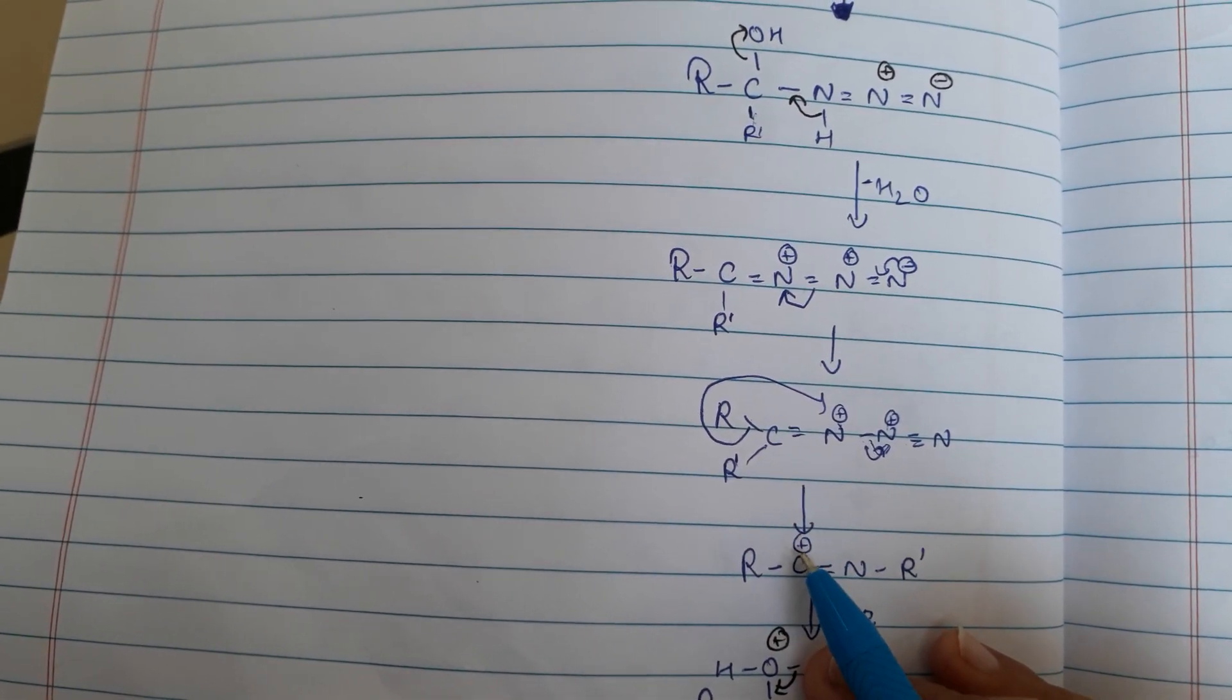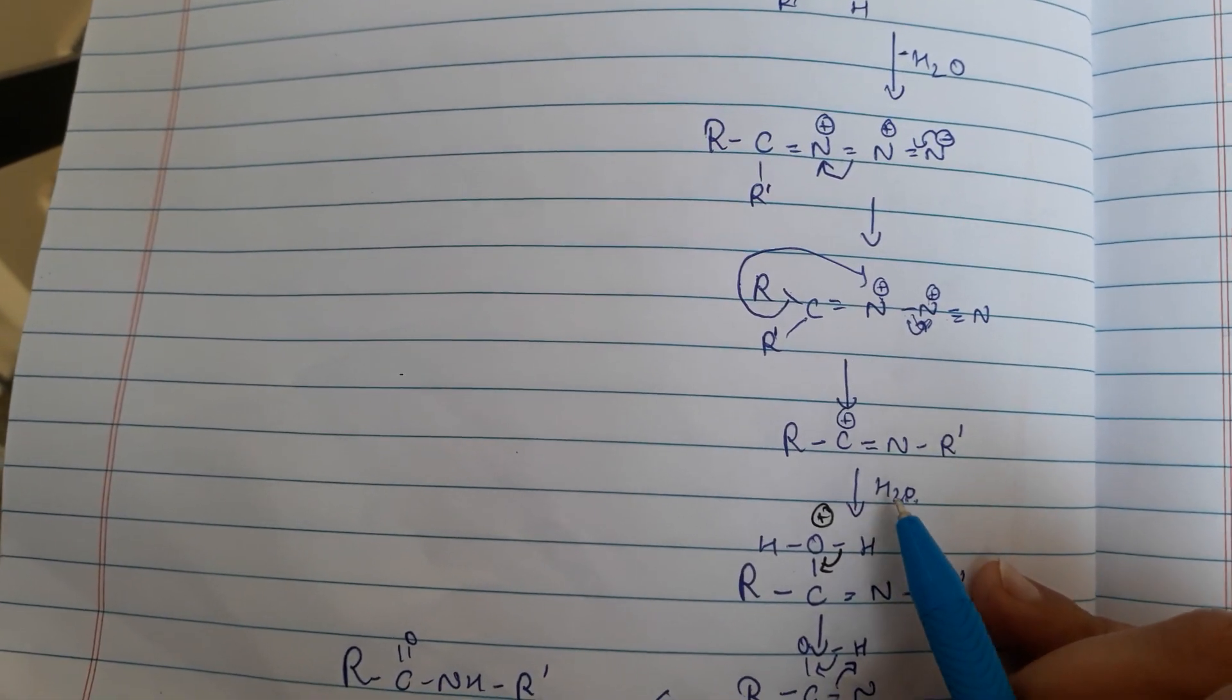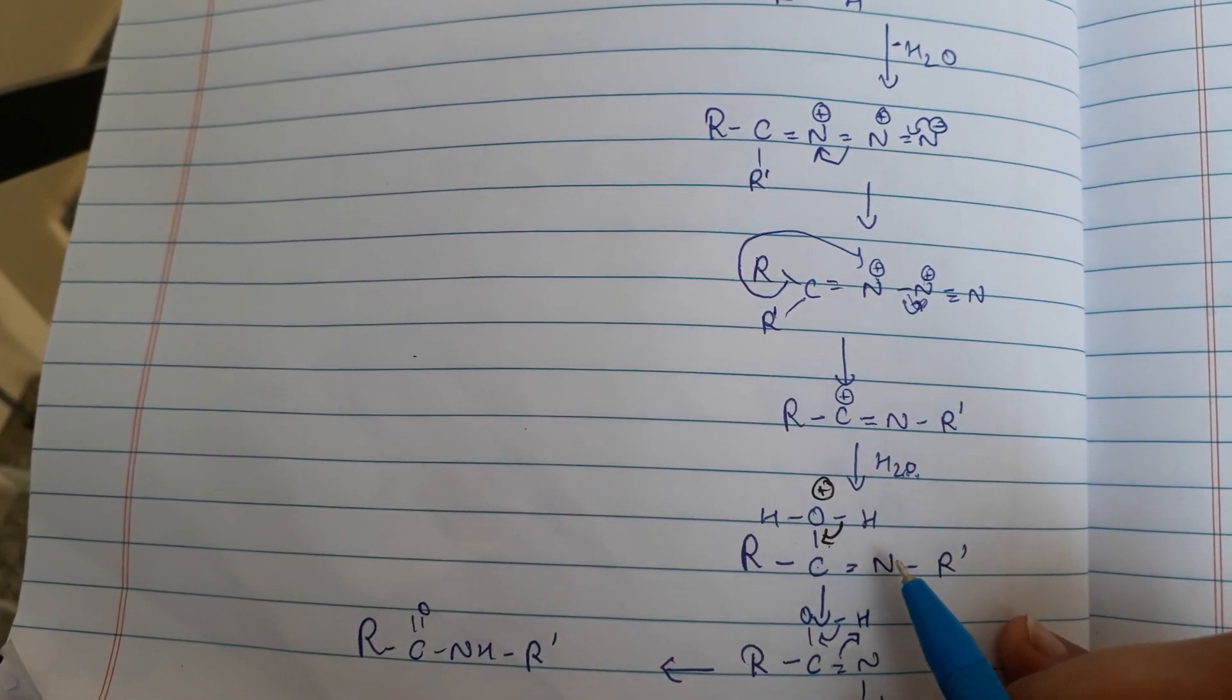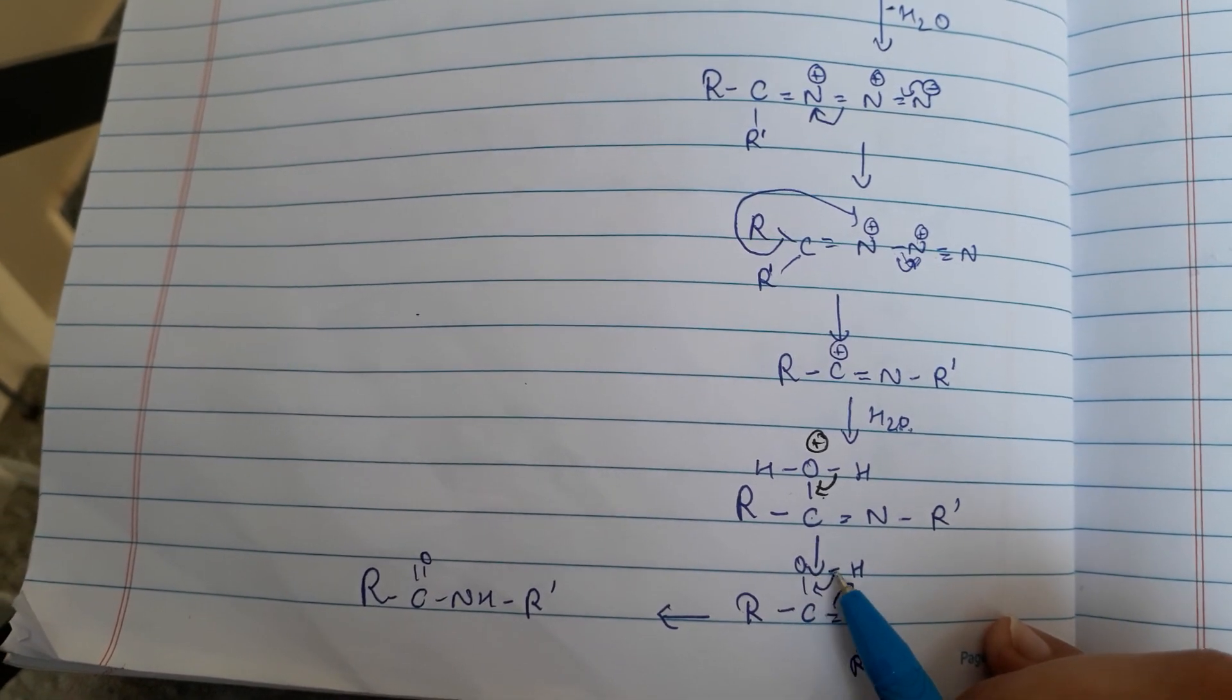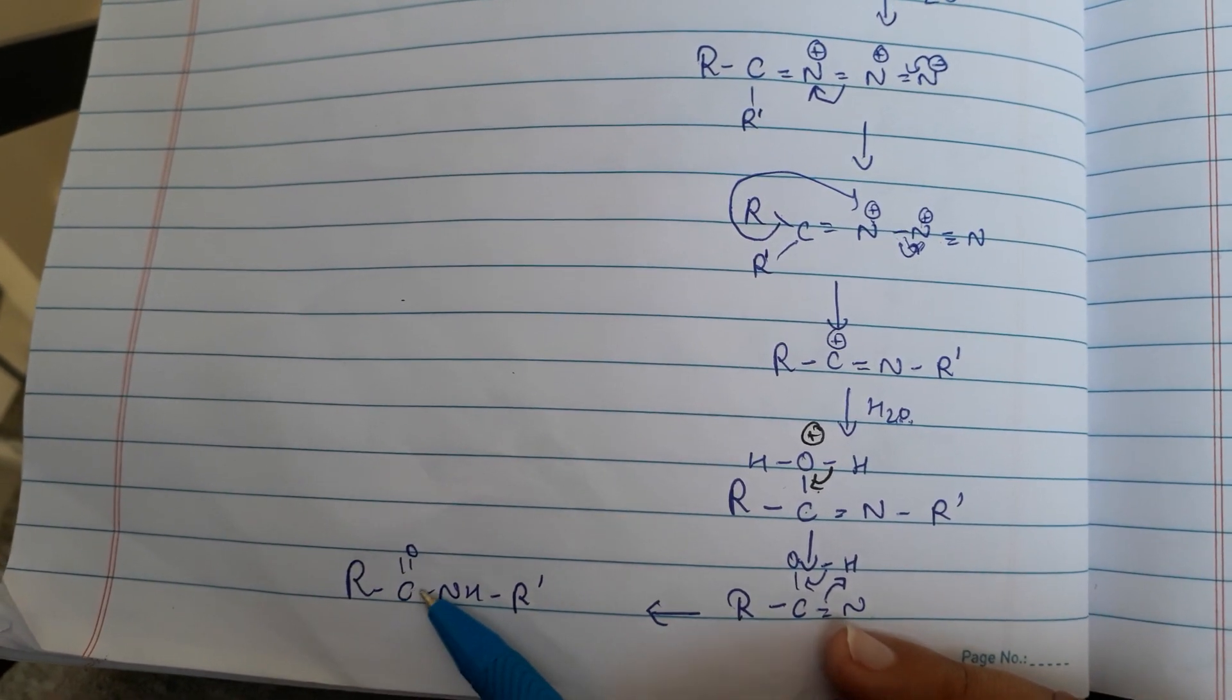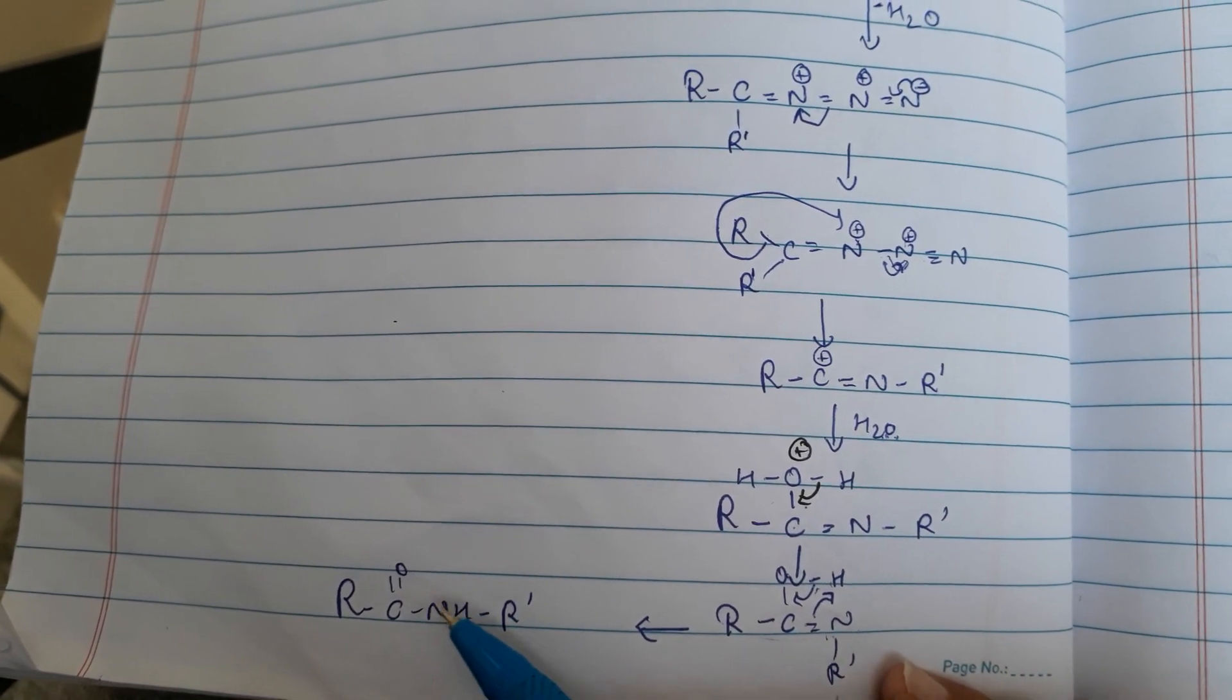RC positive double bond N and R'. On hydrolysis H2O will be on that carbon atom and this one shifts here. RC-OH is equal double bond N-R. It will give RCONH. It will take that H and R.